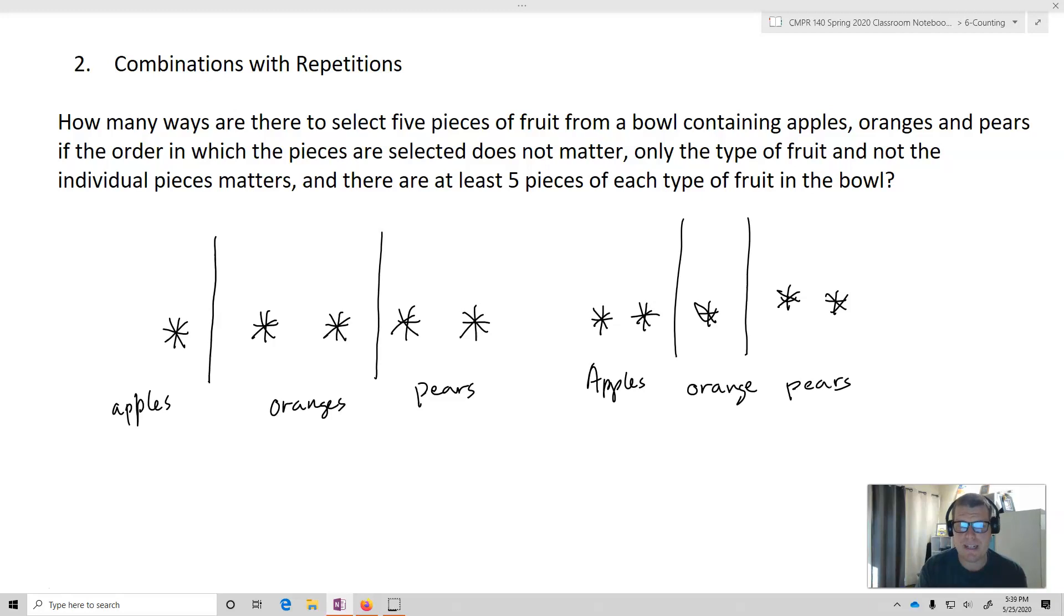Just moving those bars wherever I want to move them is actually going to give me a different number of apples, oranges, and pears. Now, how many different places could I possibly put these bars? If I imagine I've got one, two, three, four, five, six, seven different slots, it'll either have a bar or it'll have a star. So I have seven slots and I'm going to choose two of them. This is going to be a combination of seven choose two.